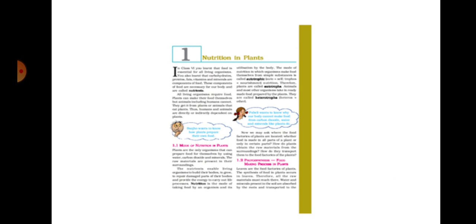Then, mode of nutrition — the types of nutrition in plants. Nutrition is divided into two major groups. The first one is autotrophic and the second one is heterotrophic. Autotrophic — 'auto' means self and 'trophos' means nourishment. So autotrophic relates to self-nourishment.